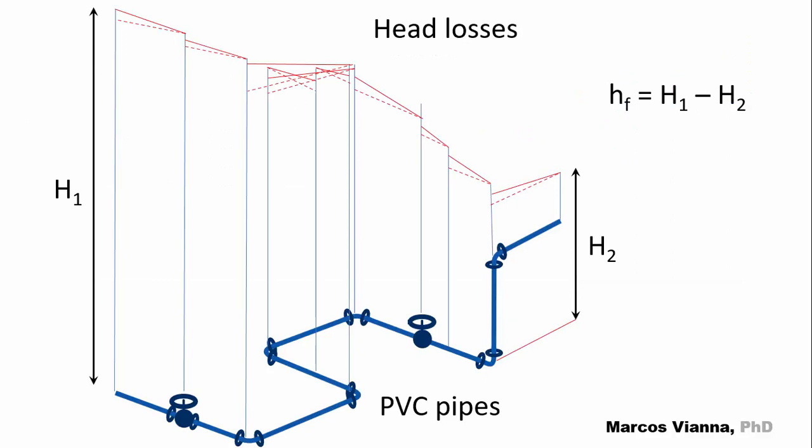Let's do an example. Let's consider this small circuit. If we want a flow of 2 liters per second, we must have a head difference H1 minus H2 to overcome the head losses. We'll assume that the water temperature is 20 degrees Celsius.